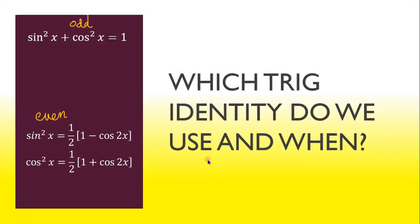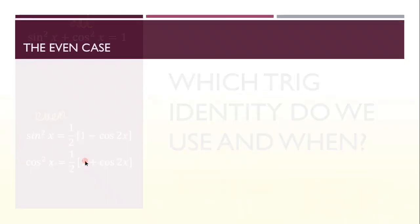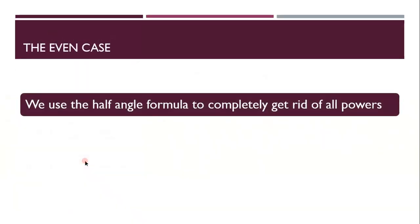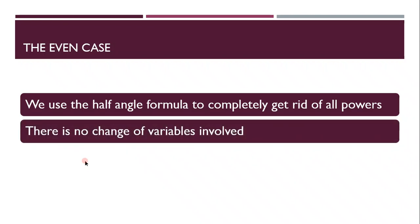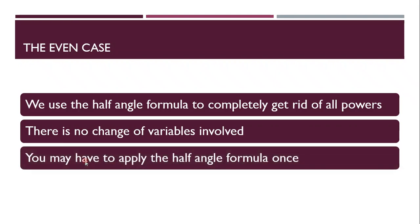So now let's have a look at the even case. So we had a look at the odd case. Now, when do we use the even case? We use the half angle formula to completely get rid of all of the powers. So there's no substitution involved. There's no change of variables involved. And you may have to apply the half angle formula more than once.